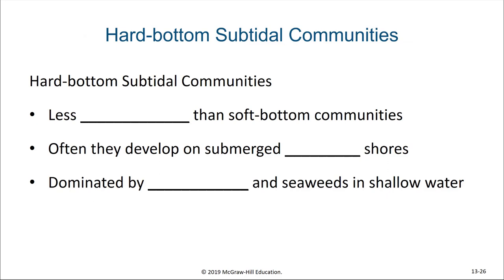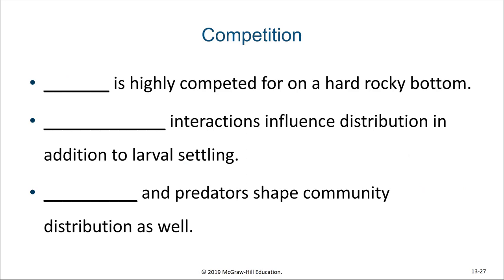The hard bottom subtidal communities are actually less common than soft bottom communities. They usually develop along submerged rocky shores. In contrast to the soft bottom communities, the hard bottom communities are dominated by epifauna and seaweeds in shallow water. Space is highly competed for on a hard rocky bottom, with community interactions influencing the distribution of organisms in addition to larval settling. Grazers and predators shape community distribution as well.